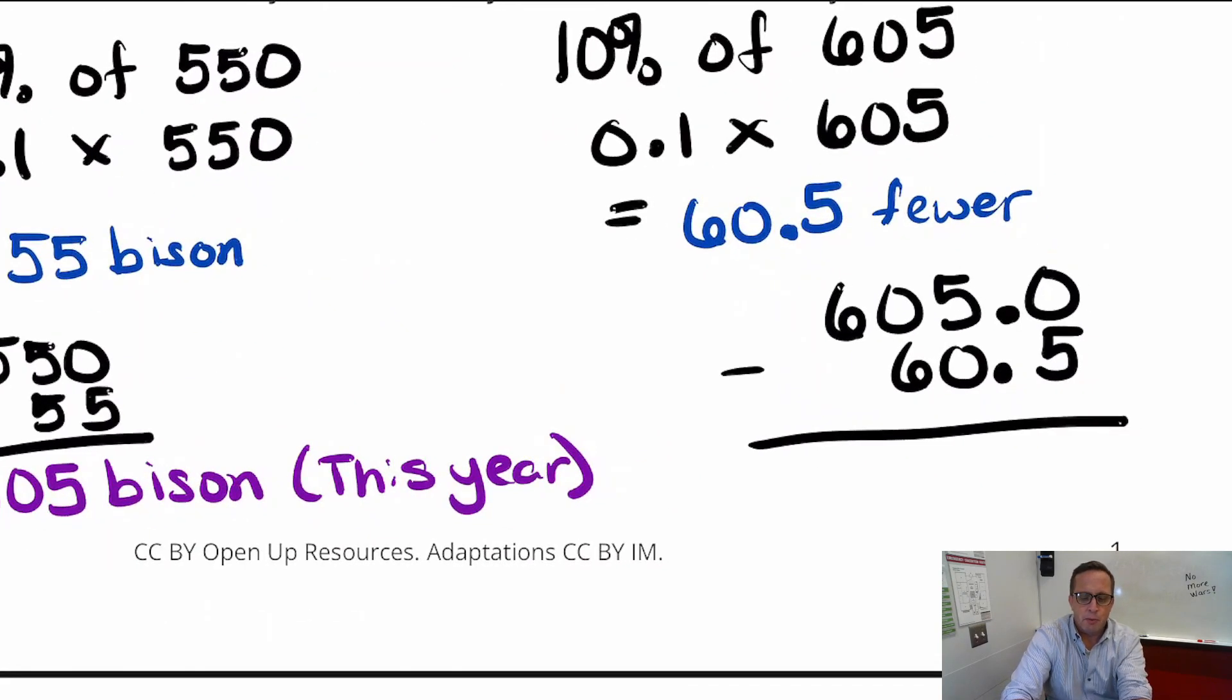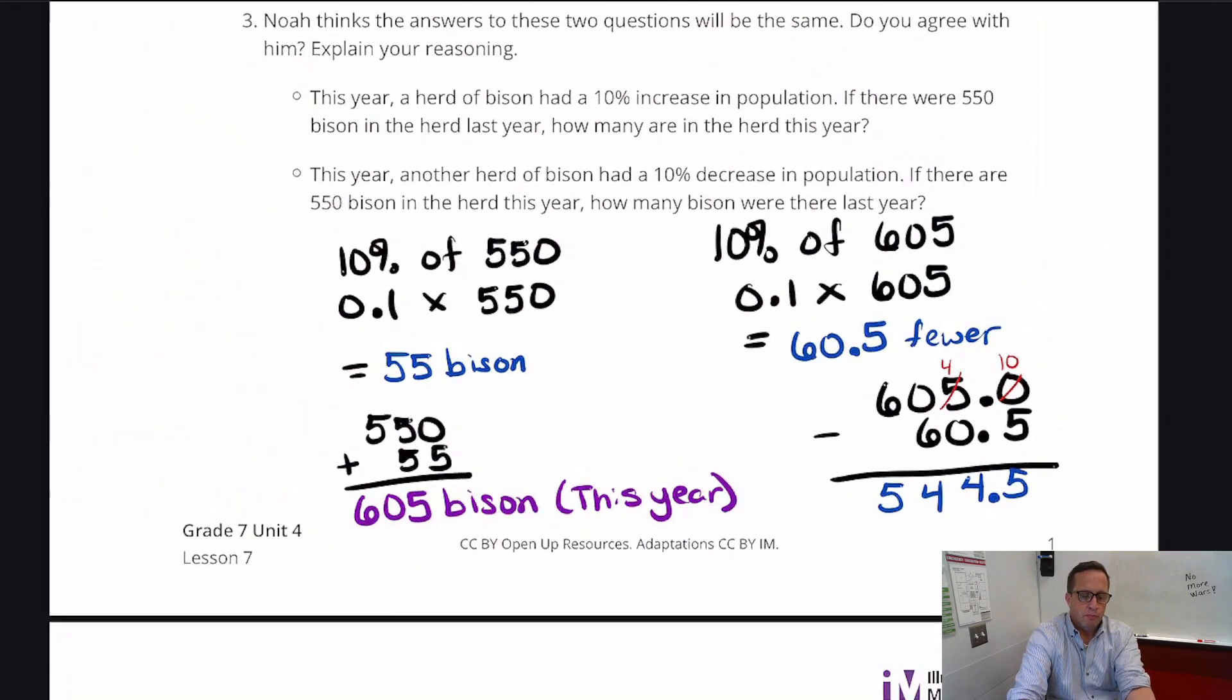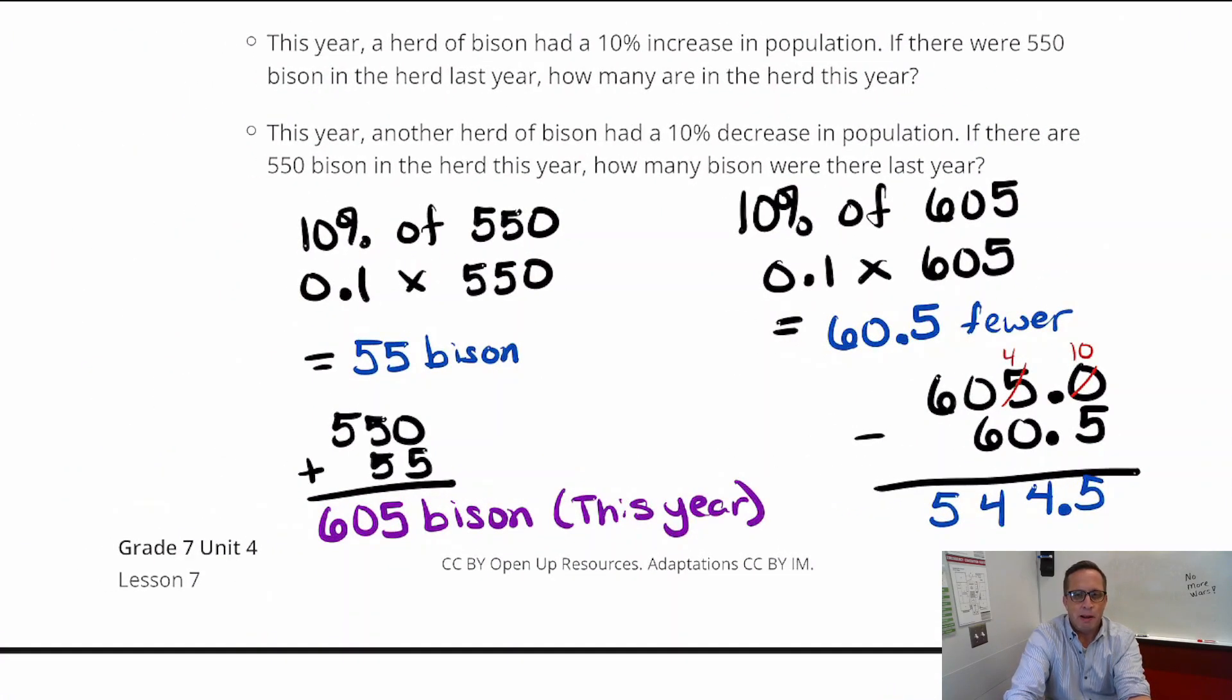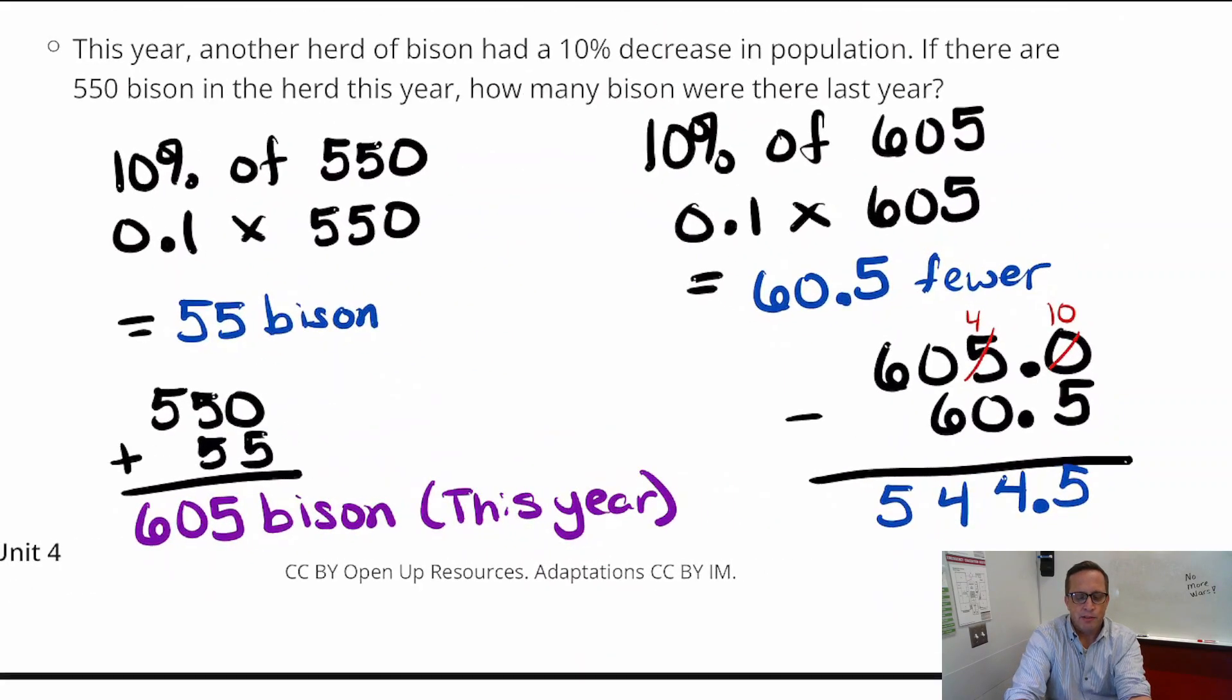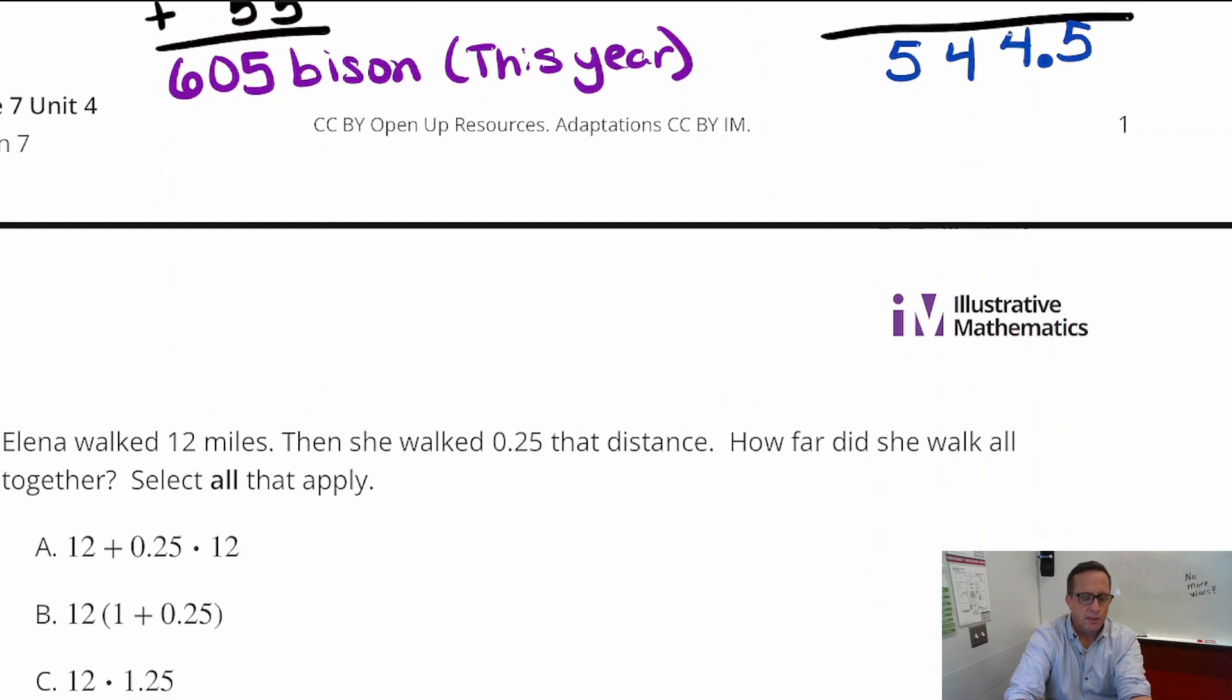Now if I apply that to 605, and then subtract 60.5 like that, you can already tell that's not going to be the same answer. That's not going to be the same answer. We're not going to get 550. We can get something pretty close to it, but not exactly. So if we just do the math here. Borrow, that becomes 10. And we're left with 5 here, and that's 4. And then 60 minus 6 is going to be 54. Bring down the decimal point. So, 544 and a half bison. That poor bison that's cut in half. That's not the same thing. Because we're taking a different percent of a number. So, it's a little different.